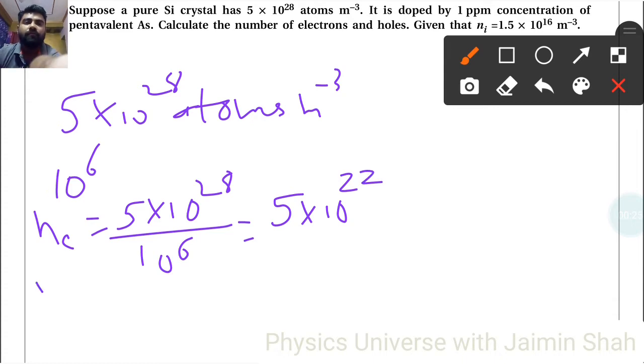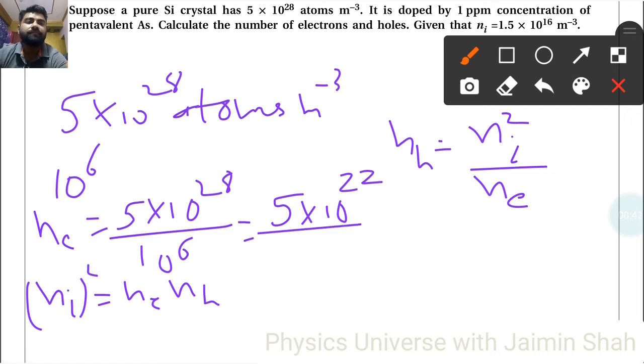Now, the formula ni² equals ne times nh. So nh equals ni² divided by ne. Here, ne is the value after adding the impurity, after doping.